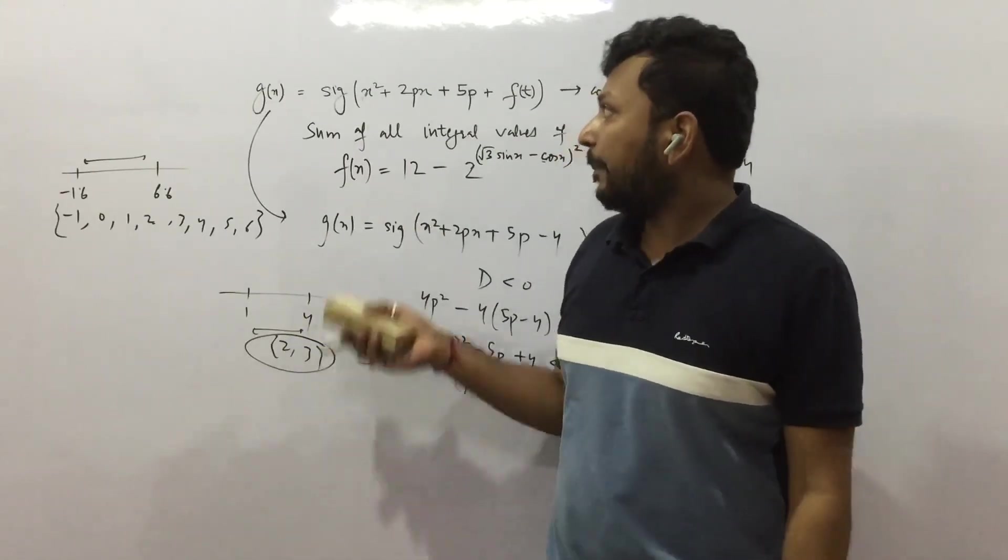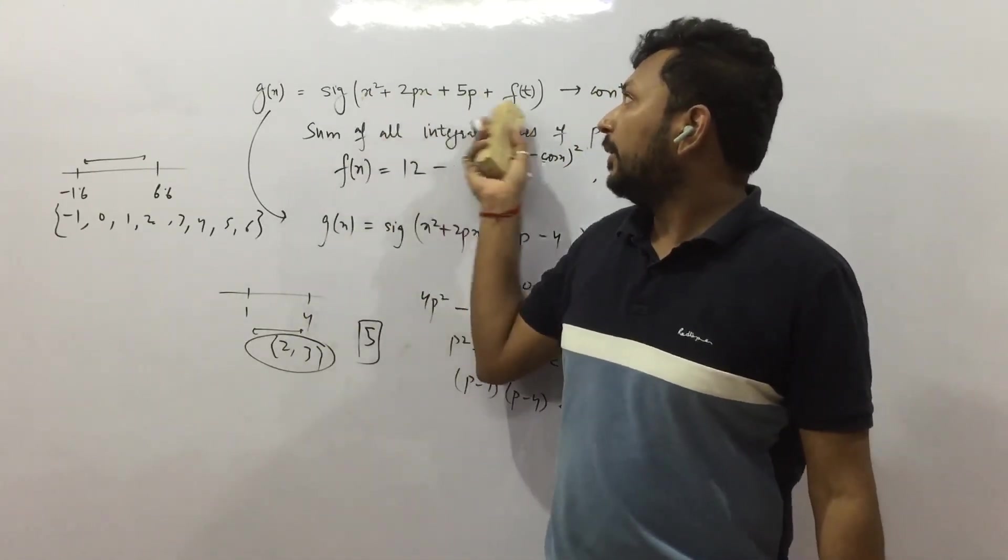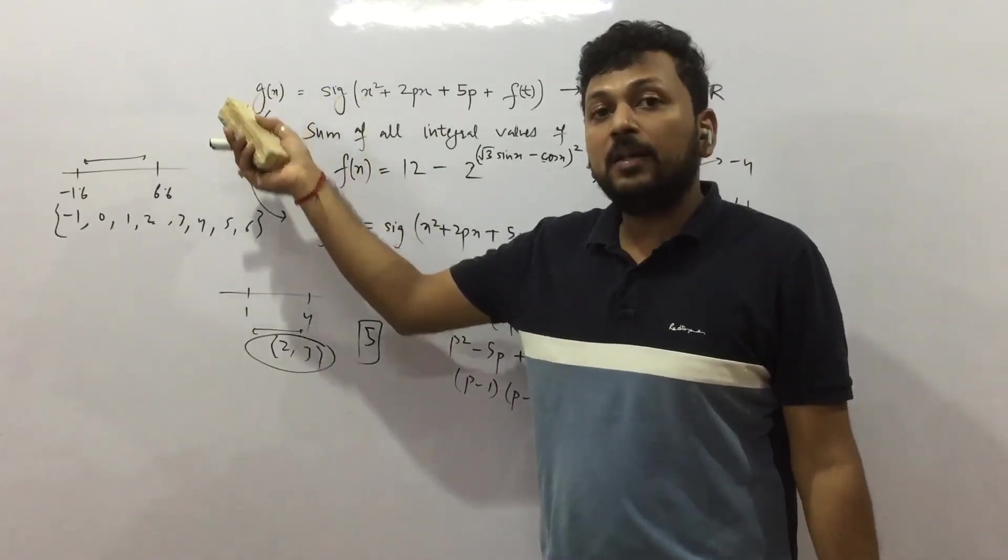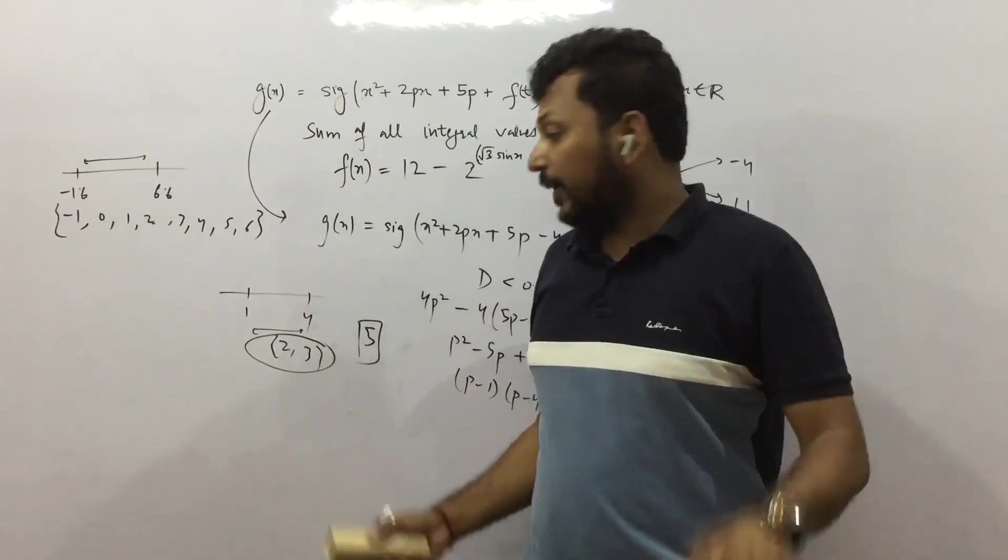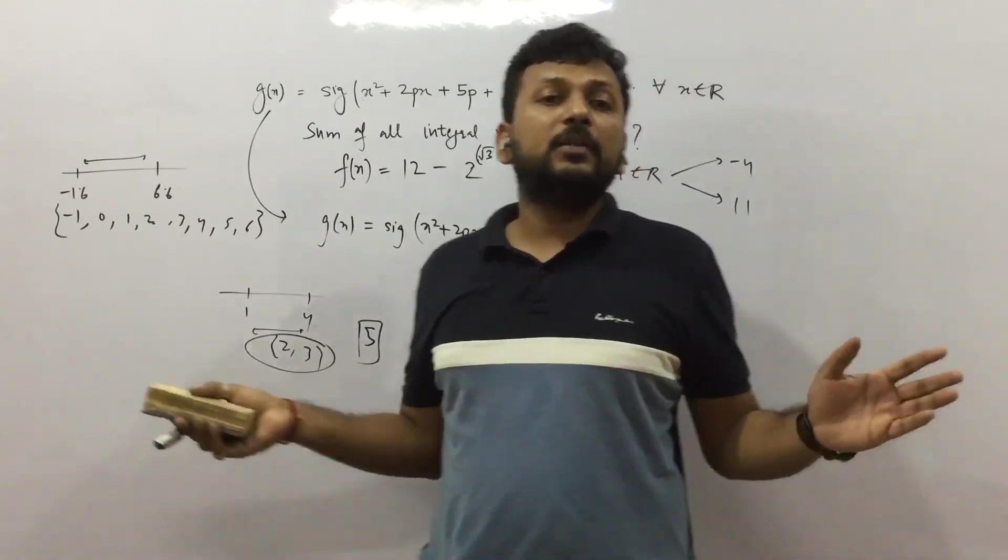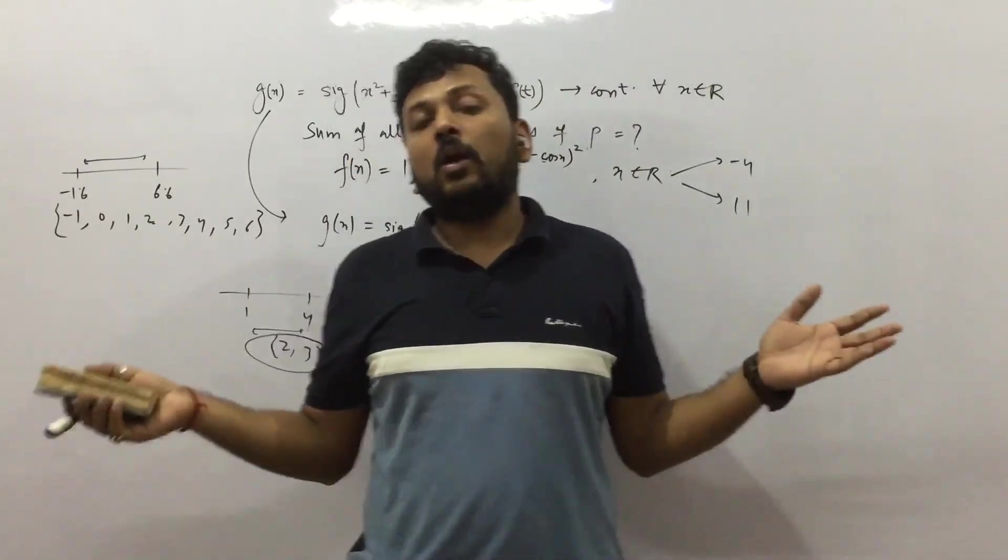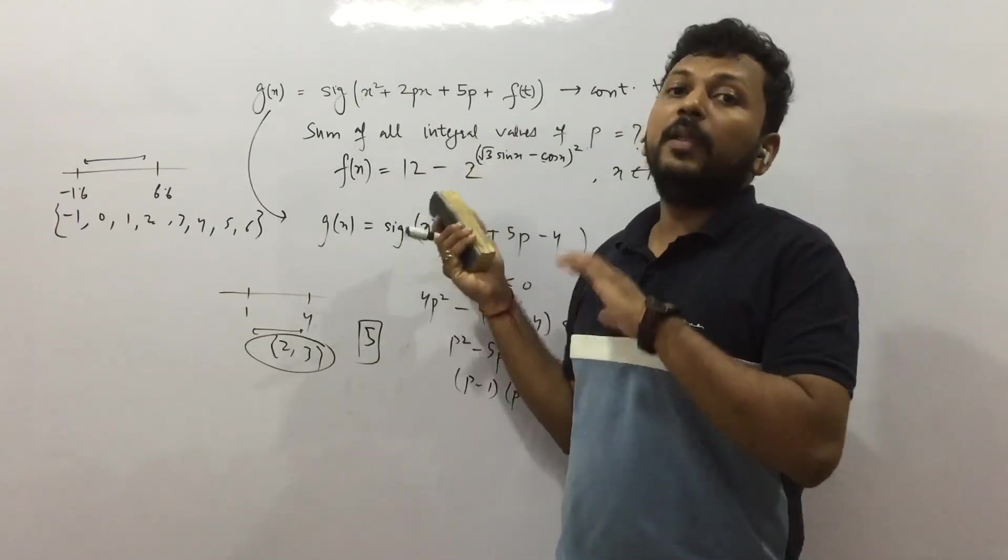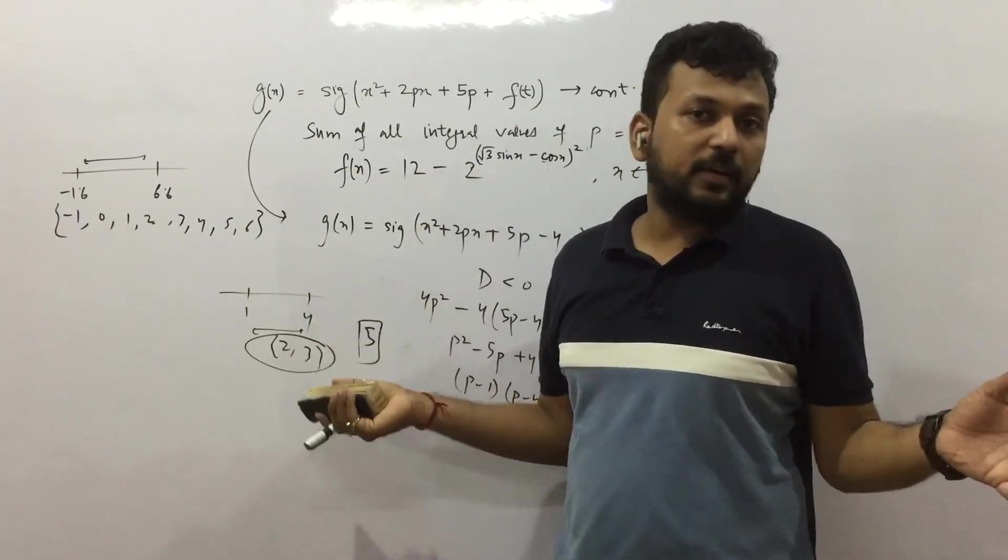So when this happens, this whole graph will be positive and signum will give you +1 answer. So g(x) will always be +1 in this case, that will always be continuous. So this is how the question has to be approached. We have to see what is the correlation between them, how do we approach, what is the use of this term, etc.